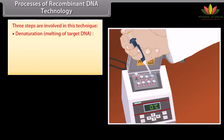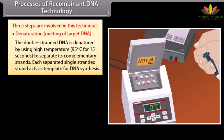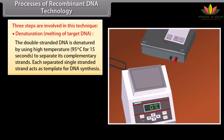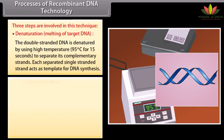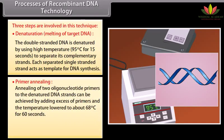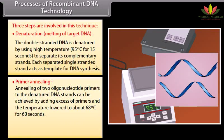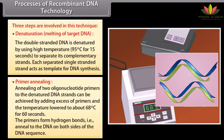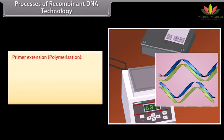Three steps are involved in this PCR technique. Denaturation — melting of target DNA: the double-stranded DNA is denatured using high temperature (95 degrees Celsius for 15 seconds) to separate its complementary strands. Each separated single-stranded strand acts as a template for DNA synthesis. Primer annealing: annealing of two oligonucleotide primers to the denatured DNA strands is achieved by adding excess of primers and lowering the temperature to about 68 degrees Celsius for 60 seconds. The primers form hydrogen bonds — that is, anneal — to the DNA on both sides of the target DNA sequence.